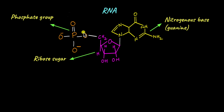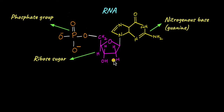Let's move on to RNA. A single monomer of RNA looks quite similar to the nucleotide of DNA: there is a phosphate group, a pentose sugar, and a nitrogenous base. However, in the case of RNA, the pentose sugar is called ribose, because it has a hydroxyl group here — oxygen is present — and not just a hydrogen group. Because oxygen is present, it is called ribose and not deoxyribose. That is one difference between RNA and DNA.